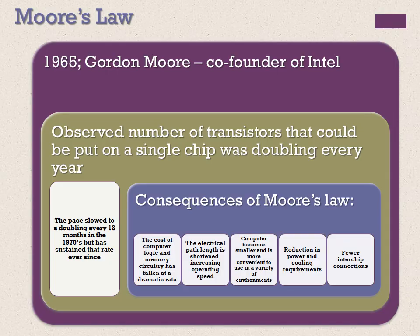Let's talk about a very important principle known as Moore's Law. Moore was one of the co-founders of Intel. He observed that the number of transistors that could be put on a single chip was doubling every year, correctly predicting that this pace would continue into the near future. Basically, he said that after every 18 months the speed would double. This has remained valid to a significant extent.